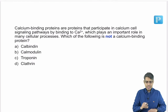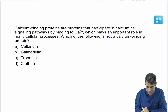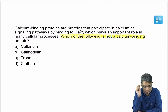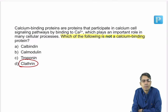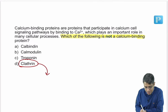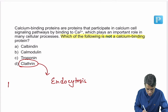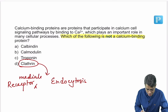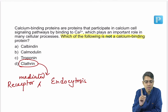Next question: which of the following is NOT a calcium binding protein? The answer is clathrin. Clathrin is a protein that helps in receptor-mediated endocytosis — it is not related to calcium binding or calcium balance.